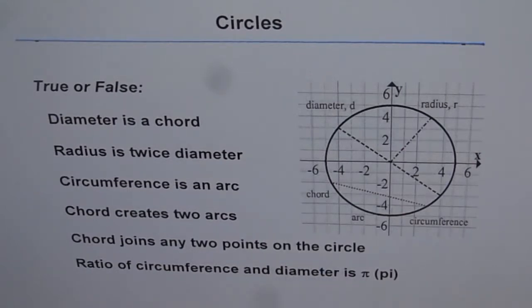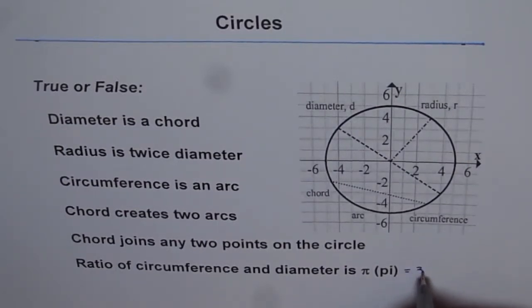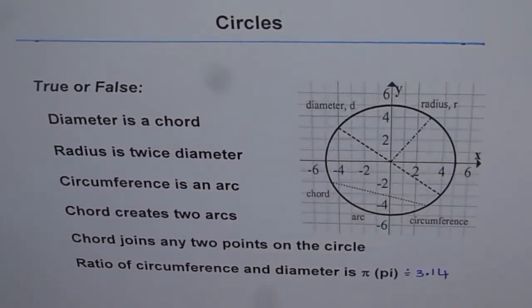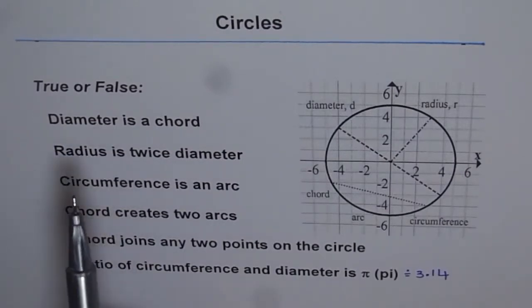Chord joins any two points on the circle. Ratio of circumference and diameter is pi, right? Pi, and the value of pi is approximately, let me write approximately 3.14. So let's answer these questions now. I hope you got them right.